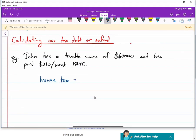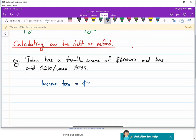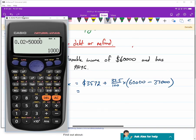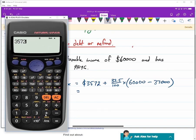So his income tax was $3,572 plus 32.5% of his income over $37,000. This is hopefully the calculation you did yesterday and we could just type it in our calculator and work out what his income tax is first. So $3,572 plus 32.5% of $60,000 over $37,000. His income tax is $11,047.